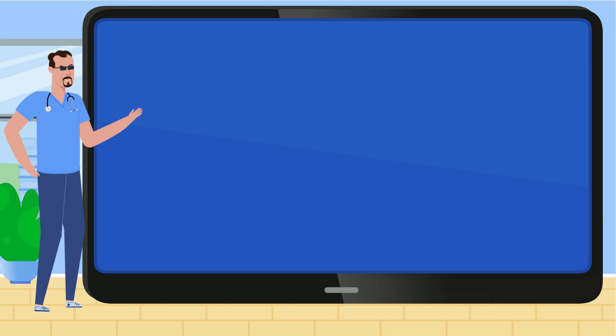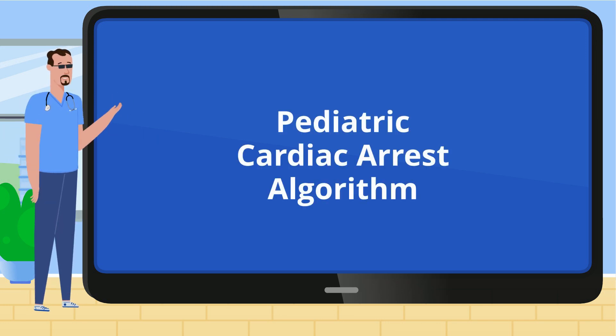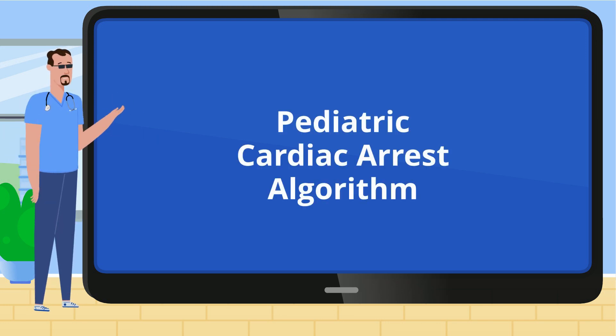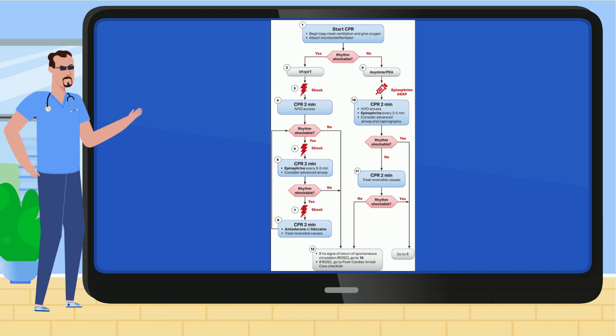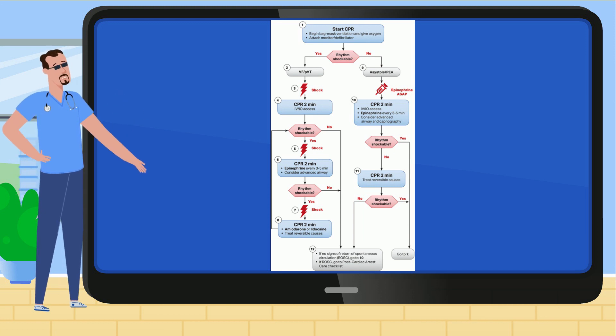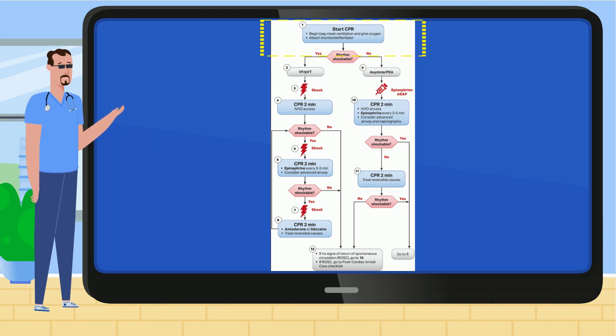So what do we do for PEA? For that information, you have to go to Pediatric Advanced Life Support — PALS algorithms. What does PALS say? For PEA, in typical PALS fashion, you start with compressions.